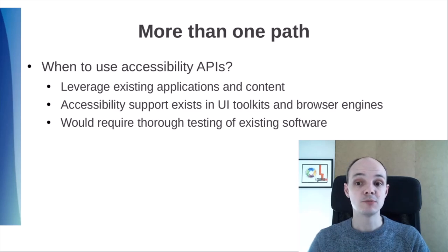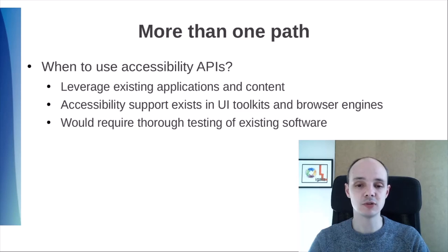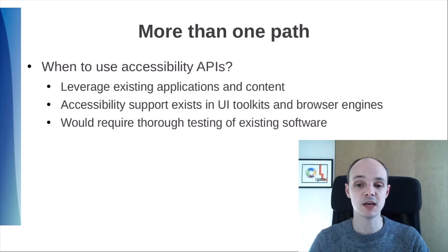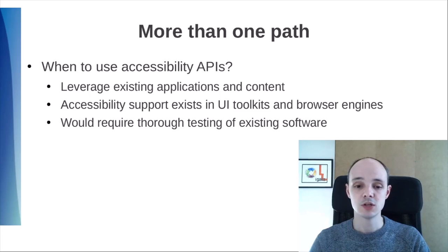We have all those options. When would accessibility APIs be a good fit? I think they are the best path if you have to leverage existing applications and content. Accessibility support is already there in toolkits and browser engines. It would require auditing and testing your software thoroughly, though, to make sure it follows best practices with regard to accessibility, especially web contents.